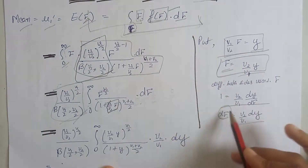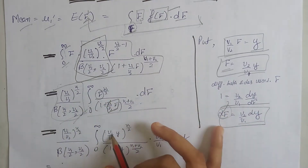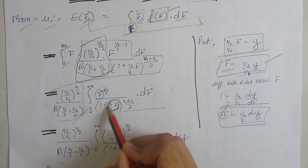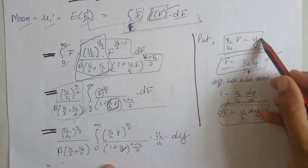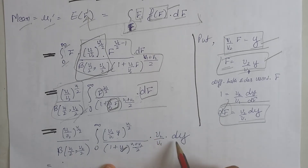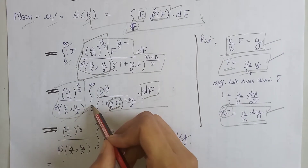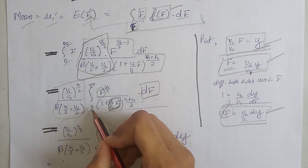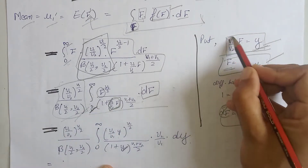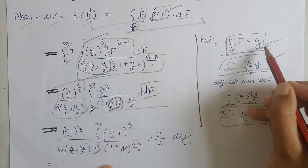We use these three equations in the integral: at the place of F we write ν₂ divided by ν₁ times y, at the place of the exponential term we write only y, and at the place of dF we write ν₂ divided by ν₁ times dy. We also change the limits: when F equals 0, y equals 0, and when F equals infinity, y equals infinity.